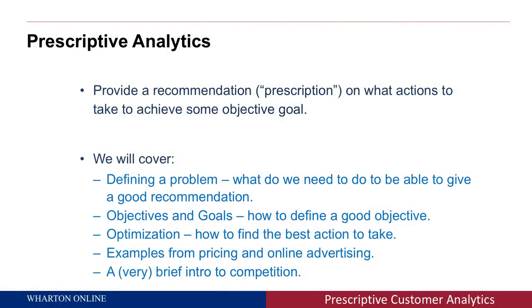Descriptive analytics takes data, collects it, and tries to map the data to patterns that you can understand. Predictive analytics tries to take the behavior of consumers and predict from their past behavior what they're going to do in the future. What we're going to do with prescriptions is try to give a recommendation — given the prediction and the description of how consumers interact with companies and with other consumers, can we give a recommendation on what the company needs to do in order to change the behavior of consumers?